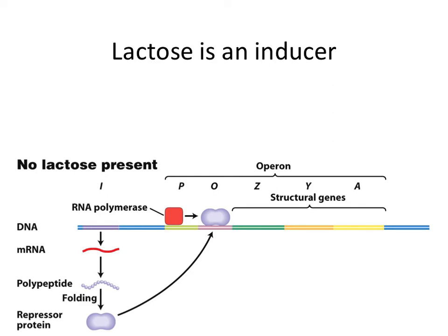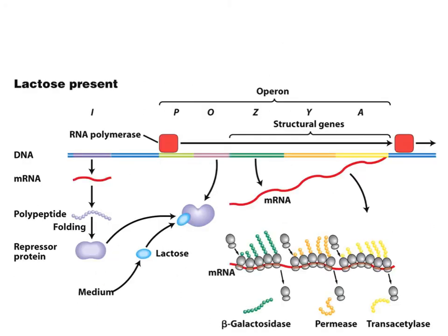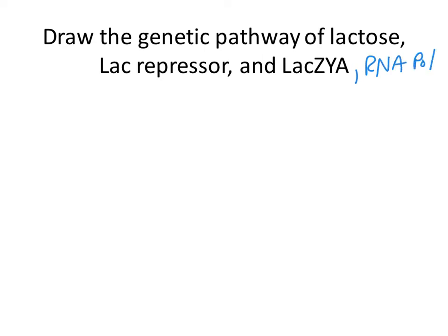So in that sense, lactose is an inducer. In the presence of lactose, you get transcription of lacZ, lacY, and lacA. So what does our pathway look like now? Take a minute and draw out the entire pathway — it should show lactose, the lac repressor, RNA polymerase, and lacZYA genes. Feel free to discuss with a neighbor. See if you can come up with the complete pathway including all four of these players.